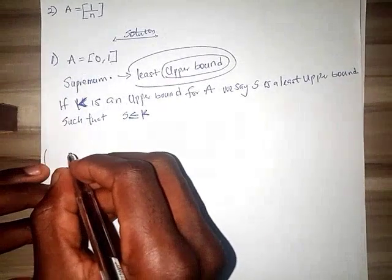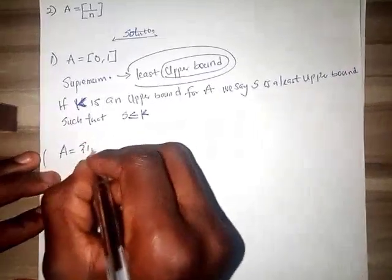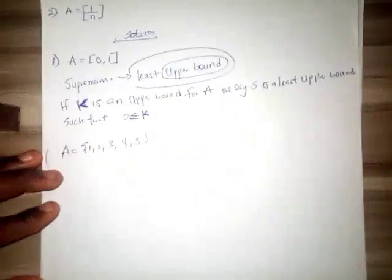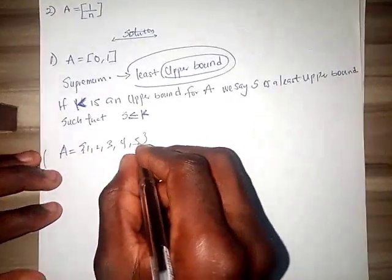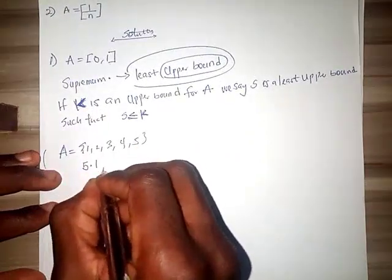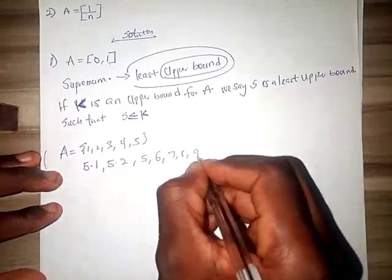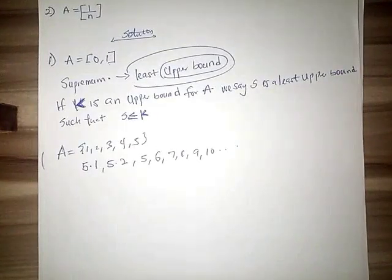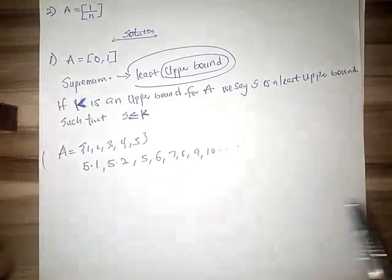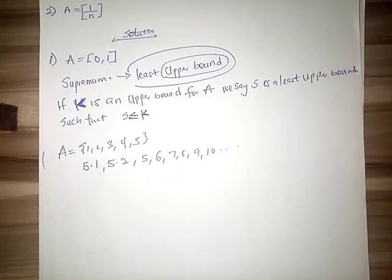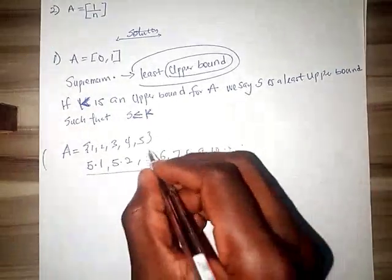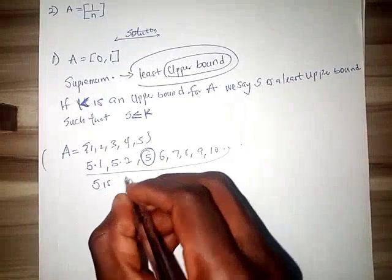Let's use this as an example so that you understand again. Let A equal to 1, 2, 3, 4, 5 as we did in the first one. We said upper bound of this one is what? 5, 5.1, 5.2 like that, 6, 7, 8, 9, 10, dot dot dot. Don't forget 5.3 is there, 5.4 is there, 6.9 is there, all of them are there. But note the criteria to pick upper bounds. Now we said the least out of them. Notice that out of this thing the least is what? Five. That means five is the supremum.